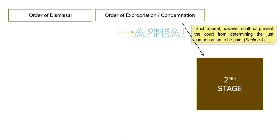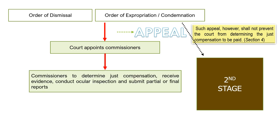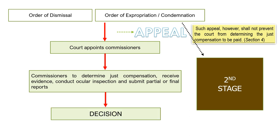Section 4 is clear that the appeal shall not prevent the court from determining the just compensation to be paid. After the order of expropriation, the court has the mandate to appoint commissioners. There will be a hearing where commissioners will determine the just compensation, receive evidence, conduct an ocular inspection, and submit a partial or final report to the court. On the basis of that report, the court will render a decision. This is the second stage of your action for expropriation.